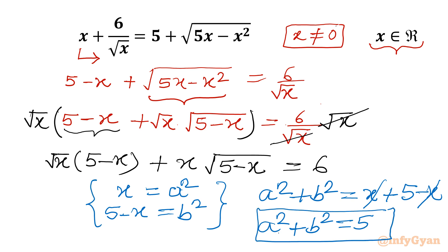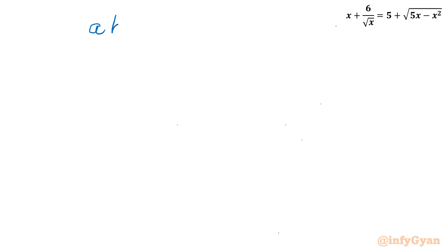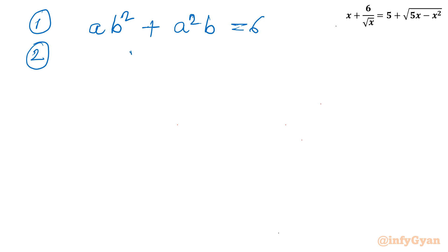Now let us put this substitution into our equation. √x becomes a and 5 − x is b², so it forms ab² + a²b = 6. Let me call this equation 1. The second equation from substitution is a² + b² = 5.